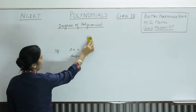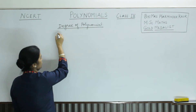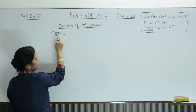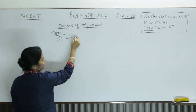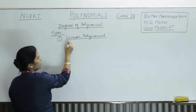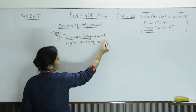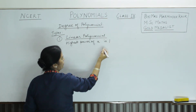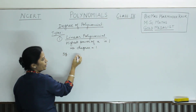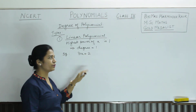Now, based on the degree of polynomial, we write the types of polynomials. Different names are given. The first type is linear polynomial. Linear means the highest power of x, or the variable, is 1 — or you can say degree is 1. For example, 3x plus 2: the highest power of x is 1, so we say it is linear.